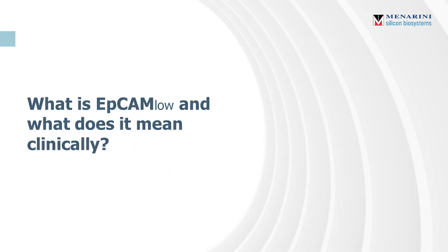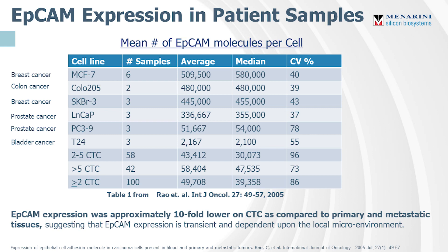So what is EpCAM low and what does it really mean clinically? I want to start with understanding EpCAM expression in patient samples. On this slide, we look at data from a 2005 paper that compared immunohistochemistry to flow cytometry to better understand the relative number and average mean of EpCAM molecules per cell. They looked at breast cancer cell lines, colon cancer, two prostate cancers, and a bladder cancer cell line, and found that EpCAM expression is approximately 10 times higher in tissues than it is in CTCs.